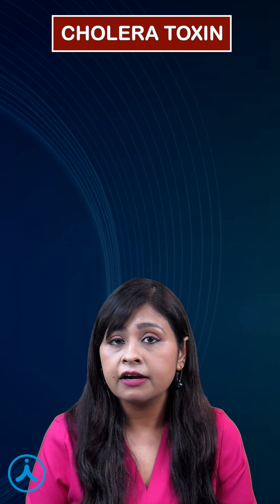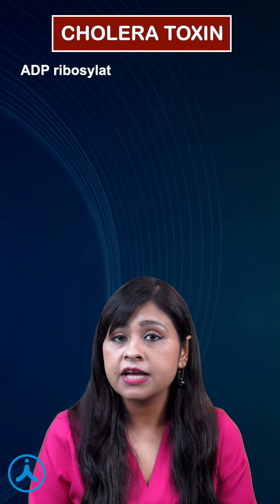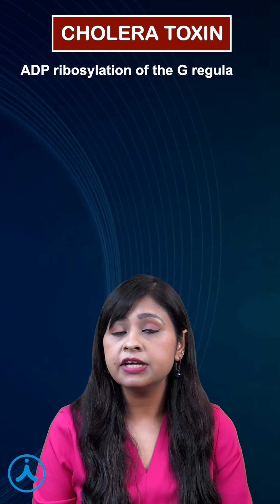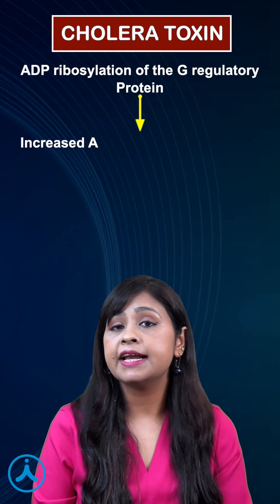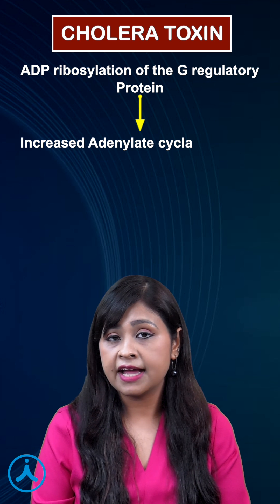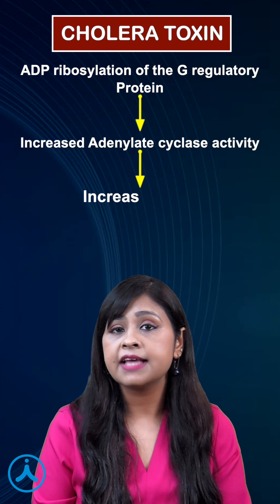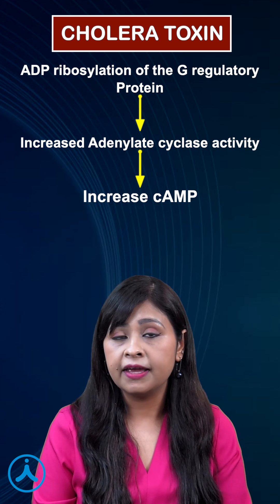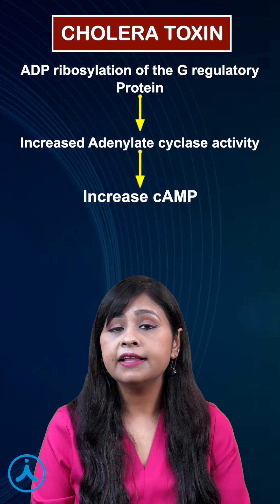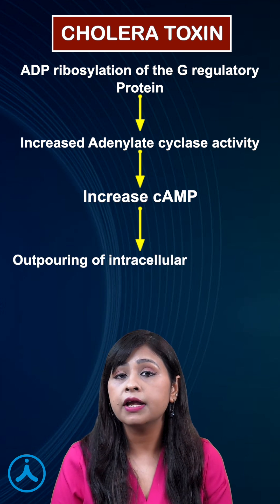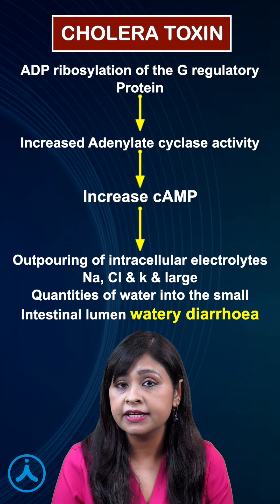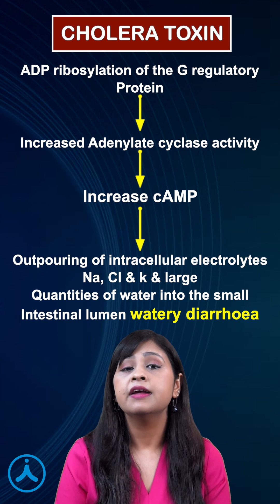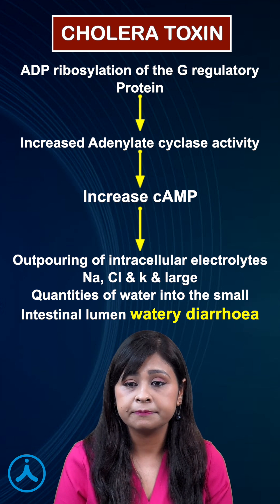The mechanism of action of cholera toxin is by ADP ribosylation of the G regulatory protein, which results in increased adenylate cyclase activity, resulting in increased cyclic AMP, and finally there is outpouring of a large number of electrolytes and water into the intestinal lumen, resulting in watery diarrhea.